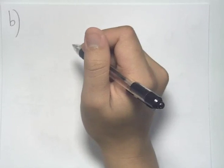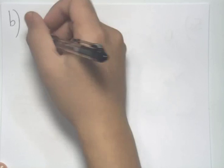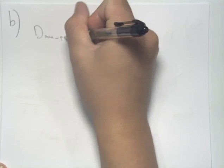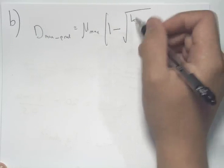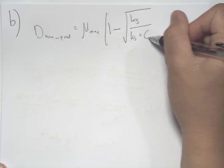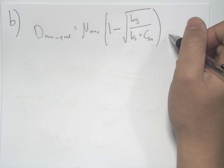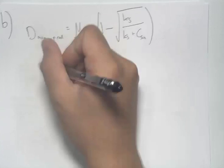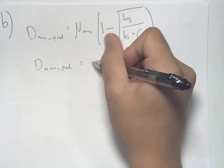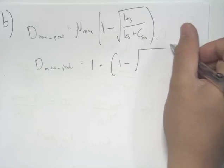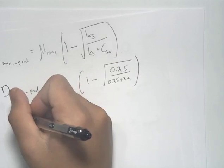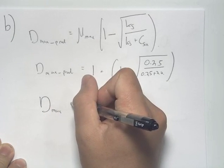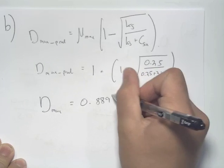Part B asks us to find the dilution rate that will give the maximum product rate. To calculate that, we use the formula: D max productivity equals the maximum specific growth rate times 1 minus the square root of Ks over Ks plus concentration of substrate in. Substituting the given values, we get a maximum productivity dilution rate D of 0.889 hours to the minus 1.